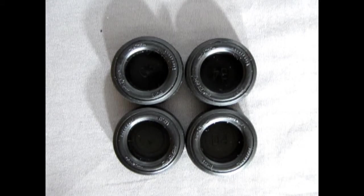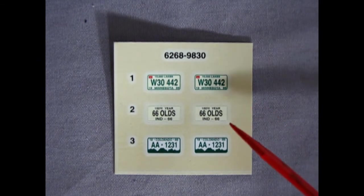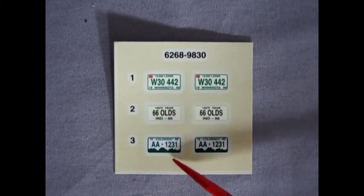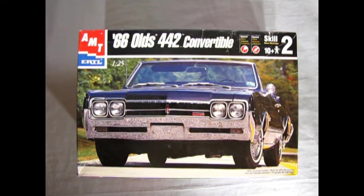So again these are very cool and I'm glad they're in here. Finally we get a look at our decal sheet which is not very big. It just consists of three license plates. Six of course for the front and the back. And here we have Minnesota, Indiana and Colorado. And of course these are great nice little license plates. W3442 66 Olds and AA1231. So again nice decals. And I hope you enjoyed this look at our 1966 Oldsmobile convertible by AMT Ertl.